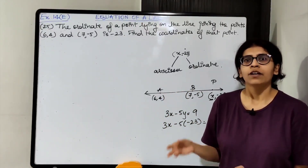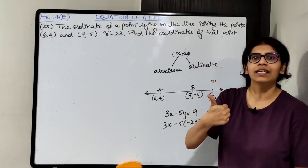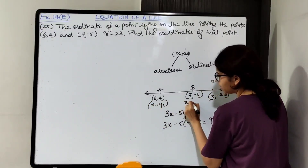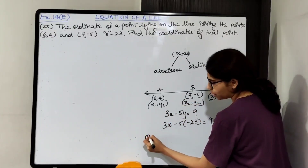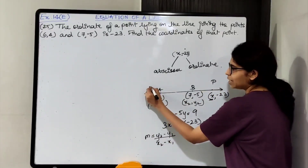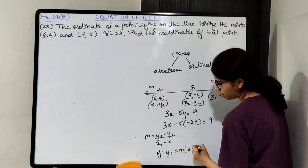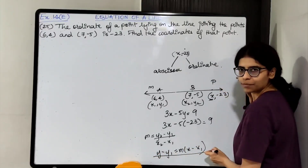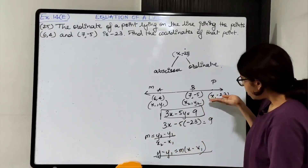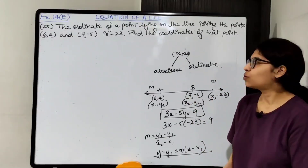We need to find the equation of line AB first. Taking A(6, 4) as (x1, y1) and B(7, −5) as (x2, y2), slope M = (−5 − 4)/(7 − 6) = −9/1 = −9. Using point-slope form with A: y − 4 = −9(x − 6), so y − 4 = −9x + 54, giving 9x + y = 58. The equation of line AB is 9x + y = 58.